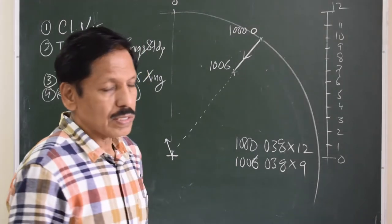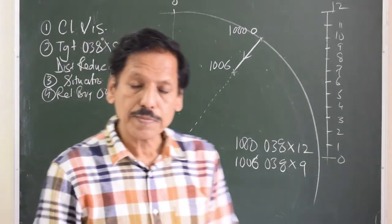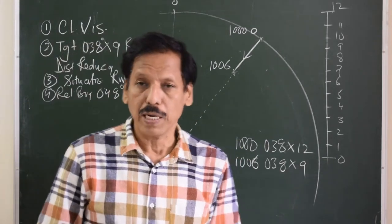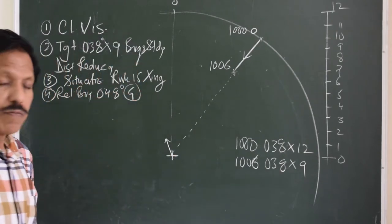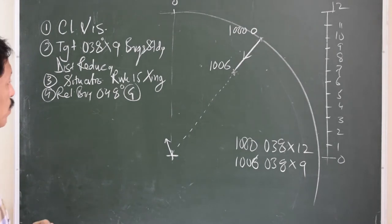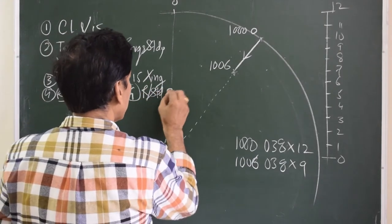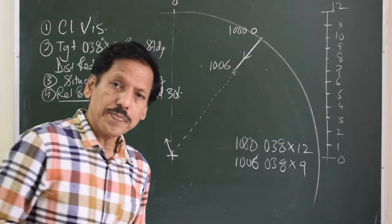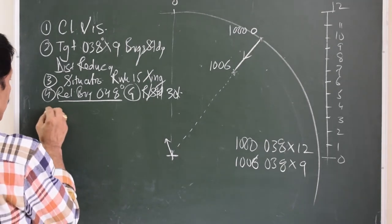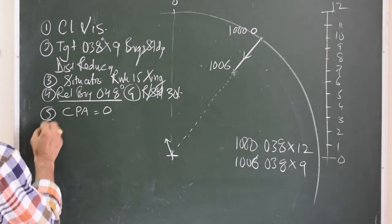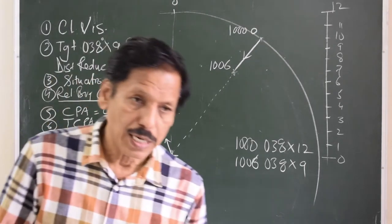Any target that moves towards the center of the PPI on a relative motion display indicates a heading for collision. CPA is therefore zero. For TCPA — relative speed is 3 miles traveled in 6 minutes. From here to here is 9 miles. Three miles in 6 minutes means 9 miles will be traveled in 18 minutes. 18 plus 6 equals 24, so TCPA is at 10:24. Relative speed is 30 knots because 3 miles in 6 minutes equals 30 miles in 60 minutes.